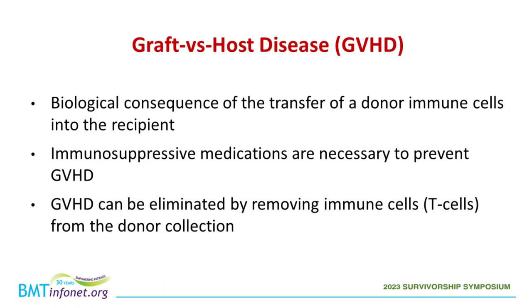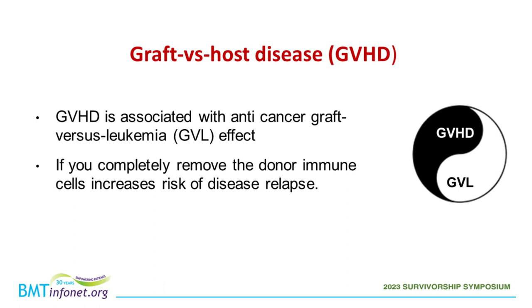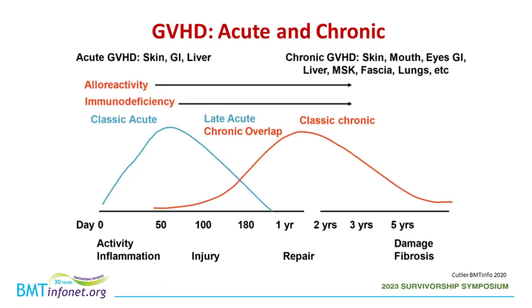But the immune cells from the donor are the actual therapeutic element of the transplant, because they are the ones that can ultimately destroy the cancer cells and cure the cancer. Graft vs. host disease is a direct consequence of transferring the immune cells of a donor into a recipient. We can eliminate it completely by removing the immune T cells from the collection, but if you remove the T cells, the transplant will also lack the graft vs. leukemia effect. So graft vs. host disease and graft vs. leukemia effect are intertwined — what we really want is the graft vs. leukemia while getting rid of the graft vs. host disease.